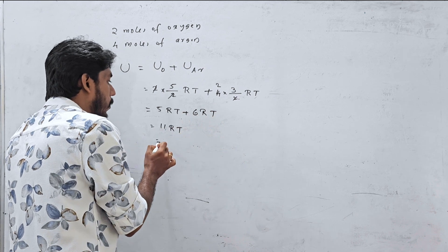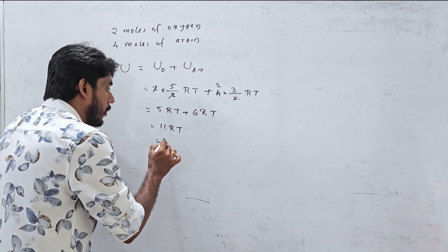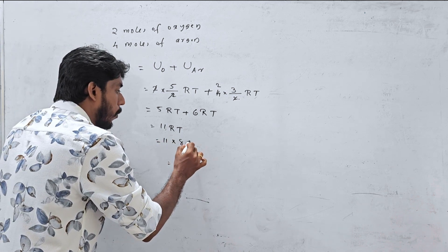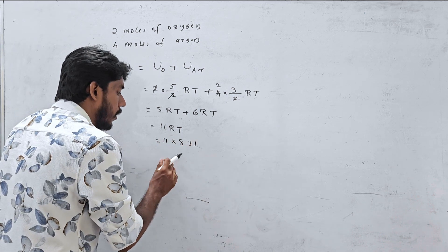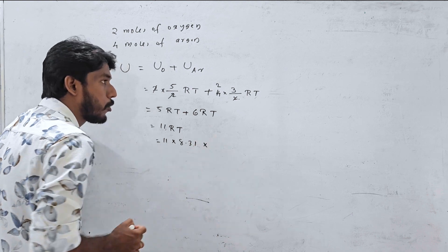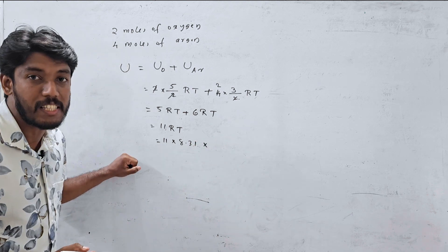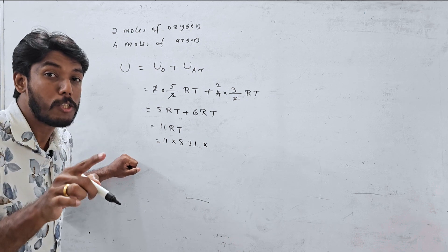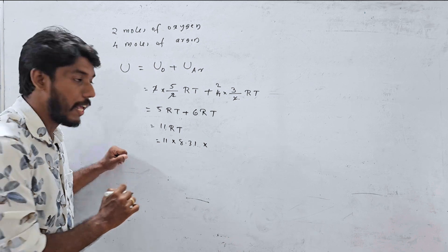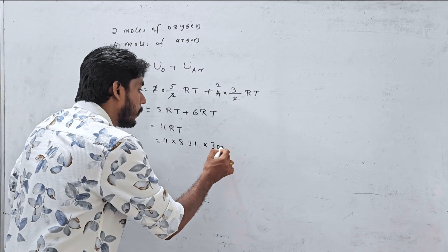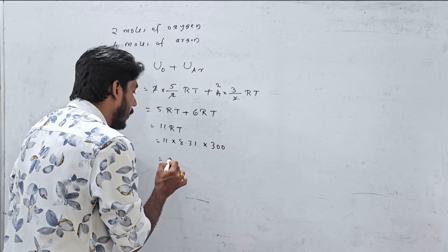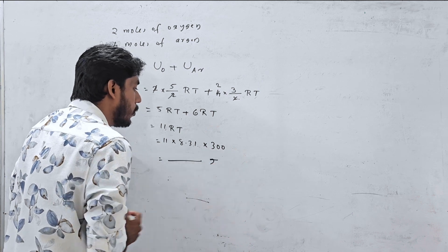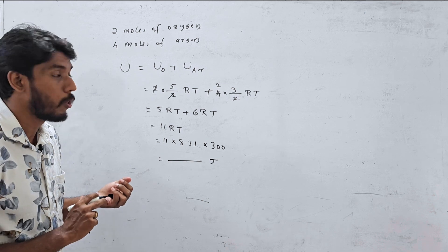The value is 11RT, where R = 8.31 J/mol·K. Temperature is 27°C, which in Kelvin is 27 + 273 = 300 K. So the total internal energy = 11 × 8.31 × 300, giving approximately 27,423 joules.